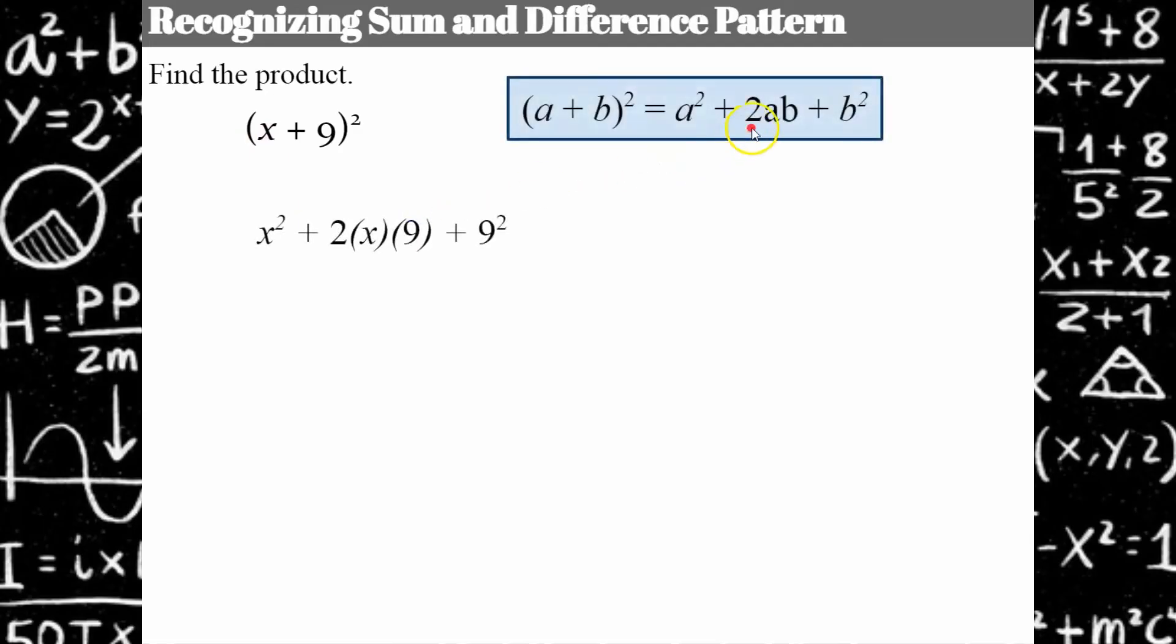So I have my pattern written down there, and here's my work. X squared plus 2 times X times 9 plus 9 squared. Where we have it, X squared plus 18X plus 81. If you don't believe me, you could try a different method and see if it checks.